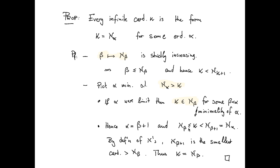But by the definition of the alephs, aleph beta plus one is the smallest cardinal greater than aleph beta. So there cannot be another cardinal truly in between aleph beta and aleph beta plus one. Hence, kappa is equal to aleph beta.